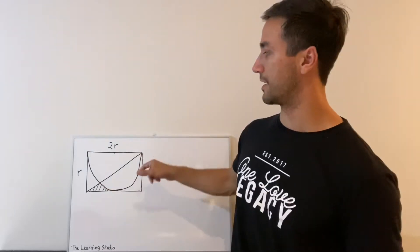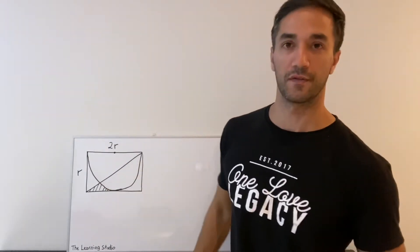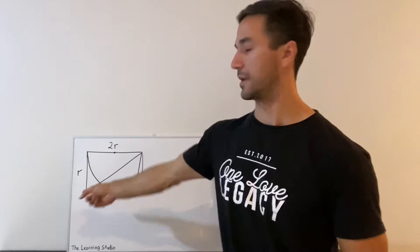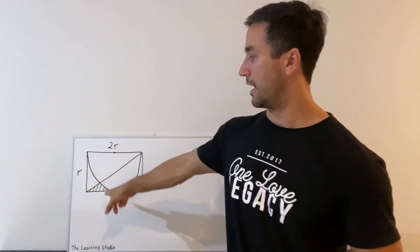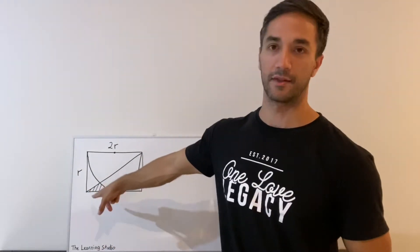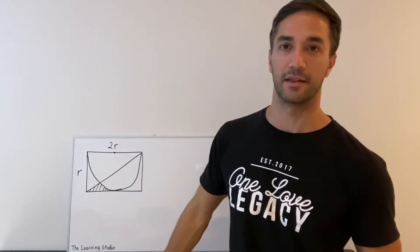We have this rectangle, we've got a semicircle sort of cut out of it, and then we've cut this diagonal bit off, and we want to know what's the area of this little section here that's been cut out.